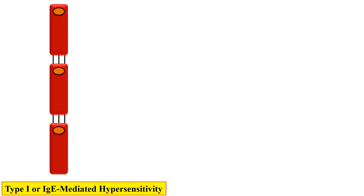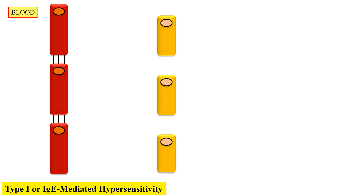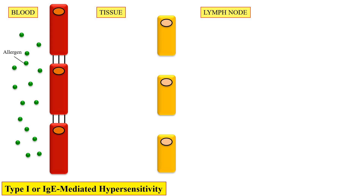Type 1 hypersensitivity is also known as IgE-mediated hypersensitivity because it is due to the immunoglobulin IgE. To understand what exactly happens, imagine three compartments: blood, tissue, and lymph node. This type 1 sensitivity develops when the antigen or allergen enters the body for the first time.